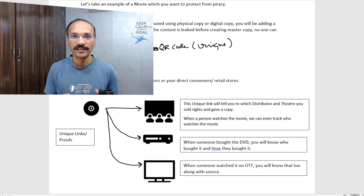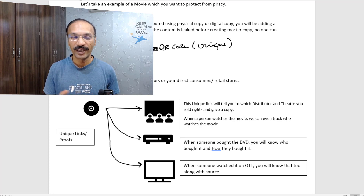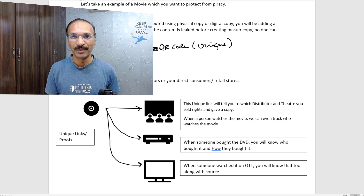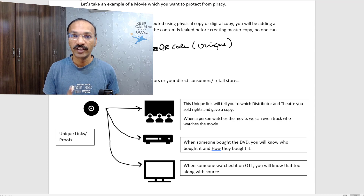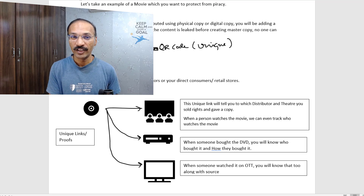Now let's say theaters are playing the movie. As an audience member, I go to the theater and watch it. With the technology, you can even record who watched your movie and how many people watched it — that level of analytical data can be implemented. In the future, you can capture who bought the ticket, what their age is, which theater is playing it, and how many shows.